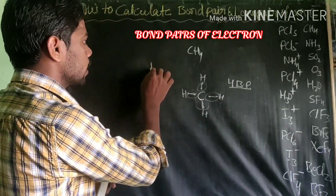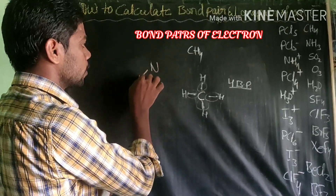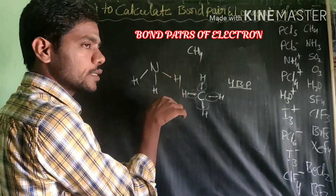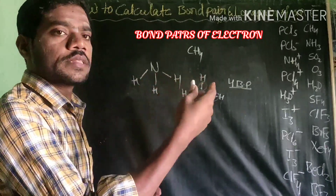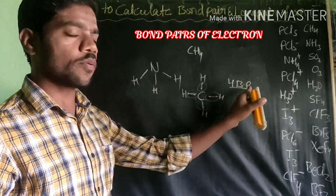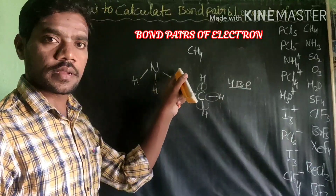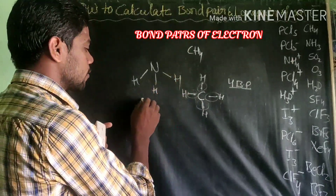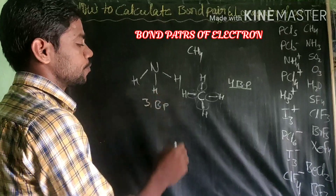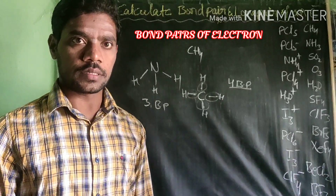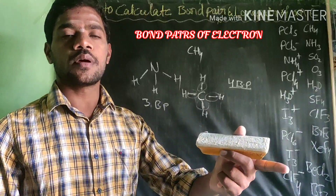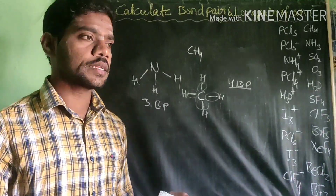Bond pair means the number of electrons involved in bond formation — they are called bond pairs of electrons. For ammonia, there are three bonds, therefore there are three bond pairs of electrons. Number of bonds equals number of bond pairs — it's very simple.